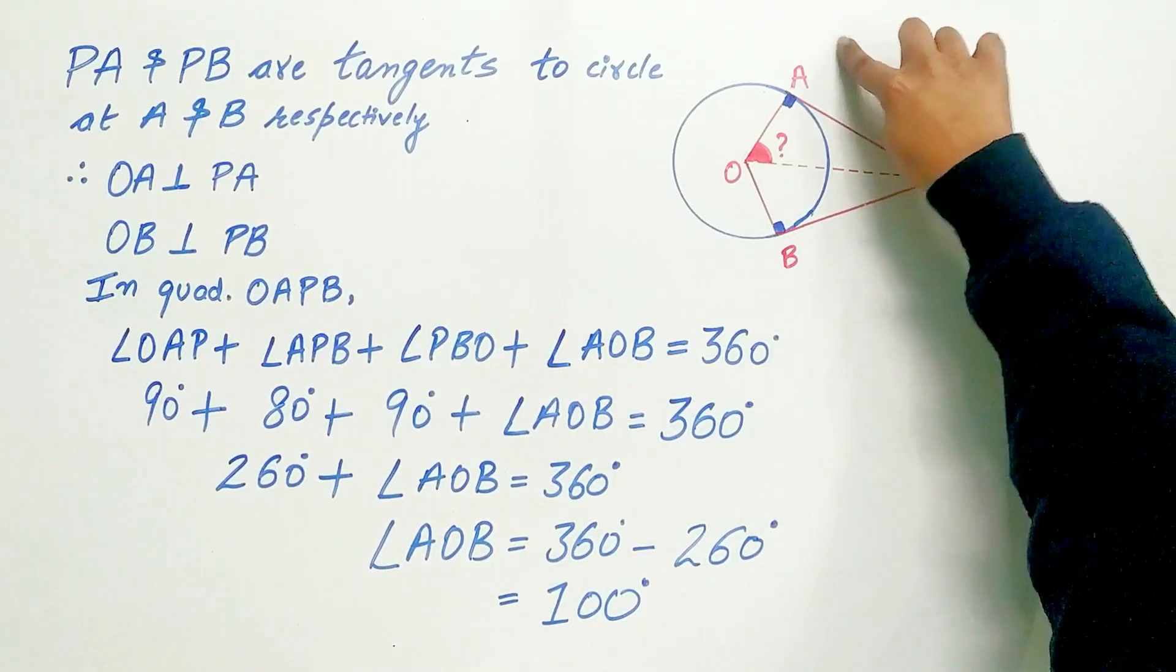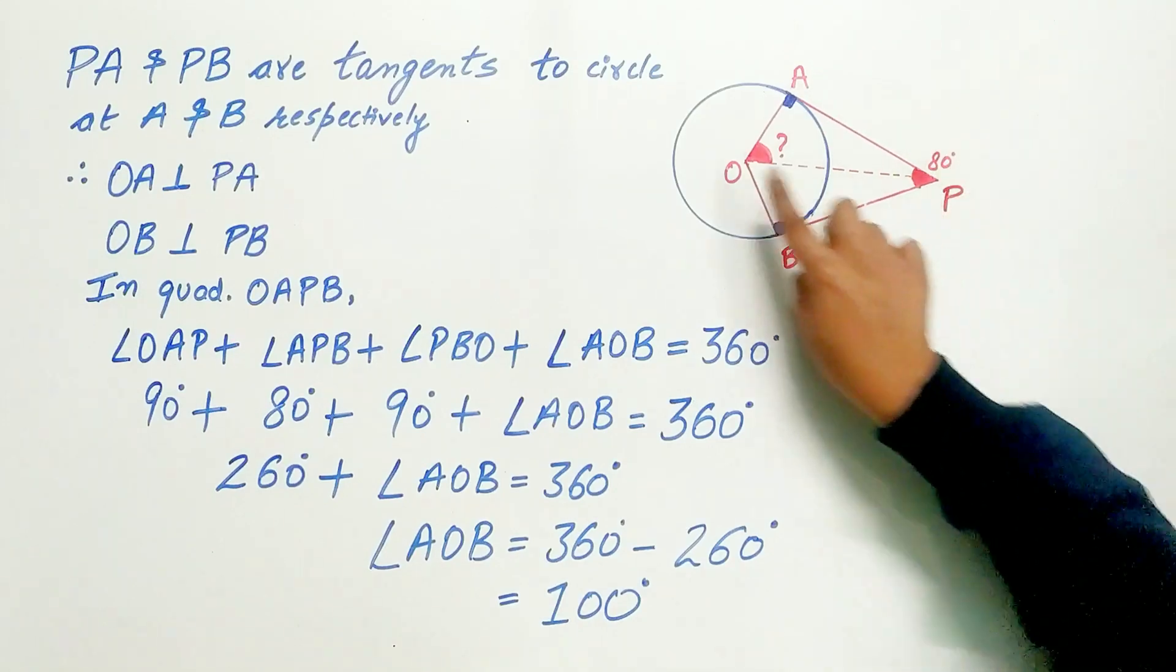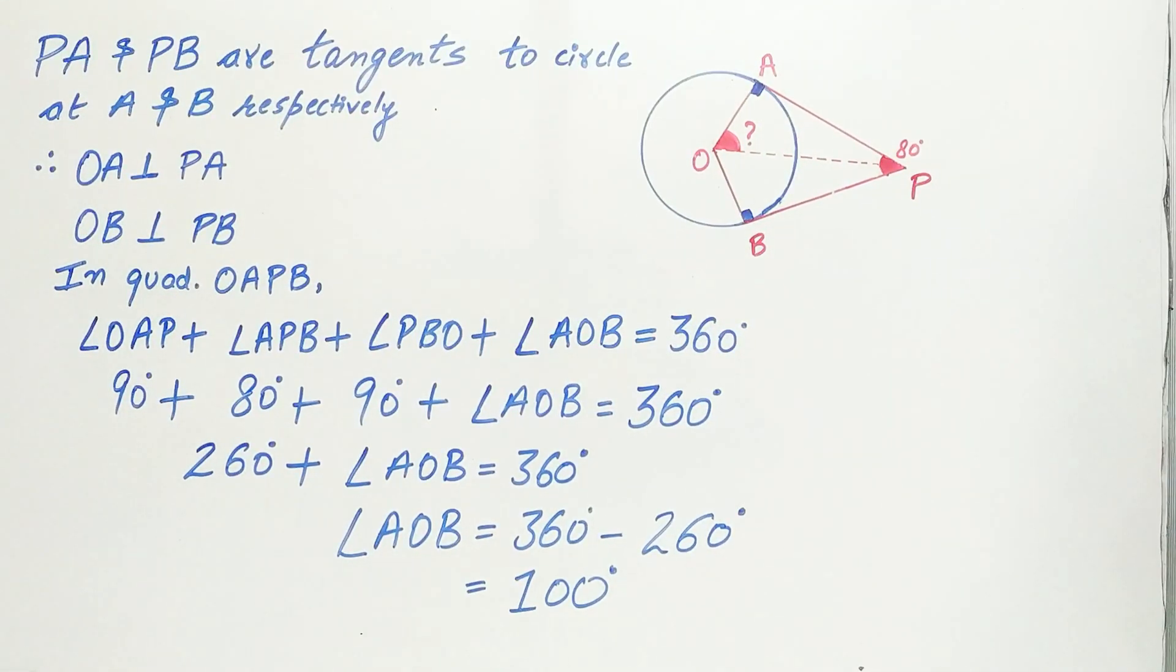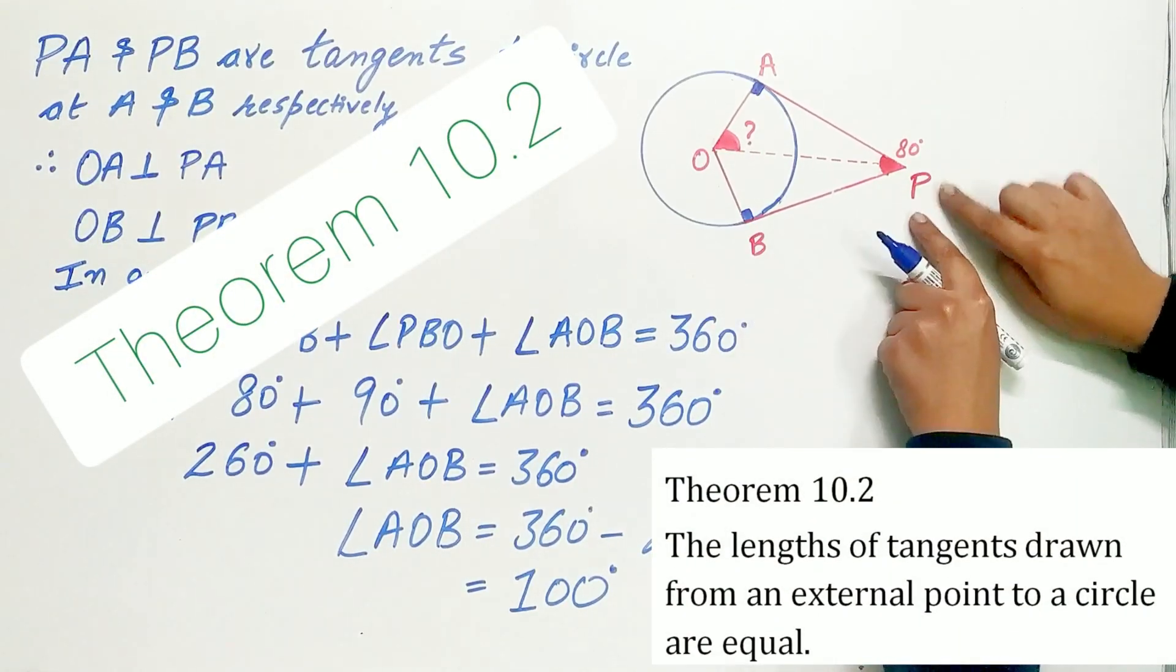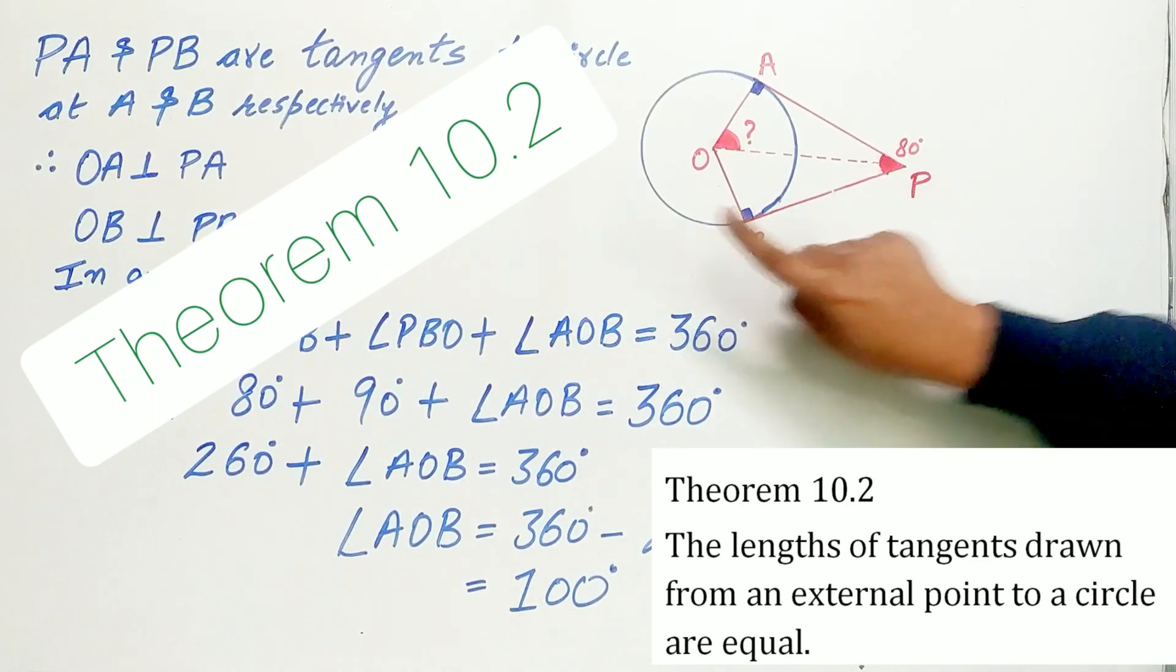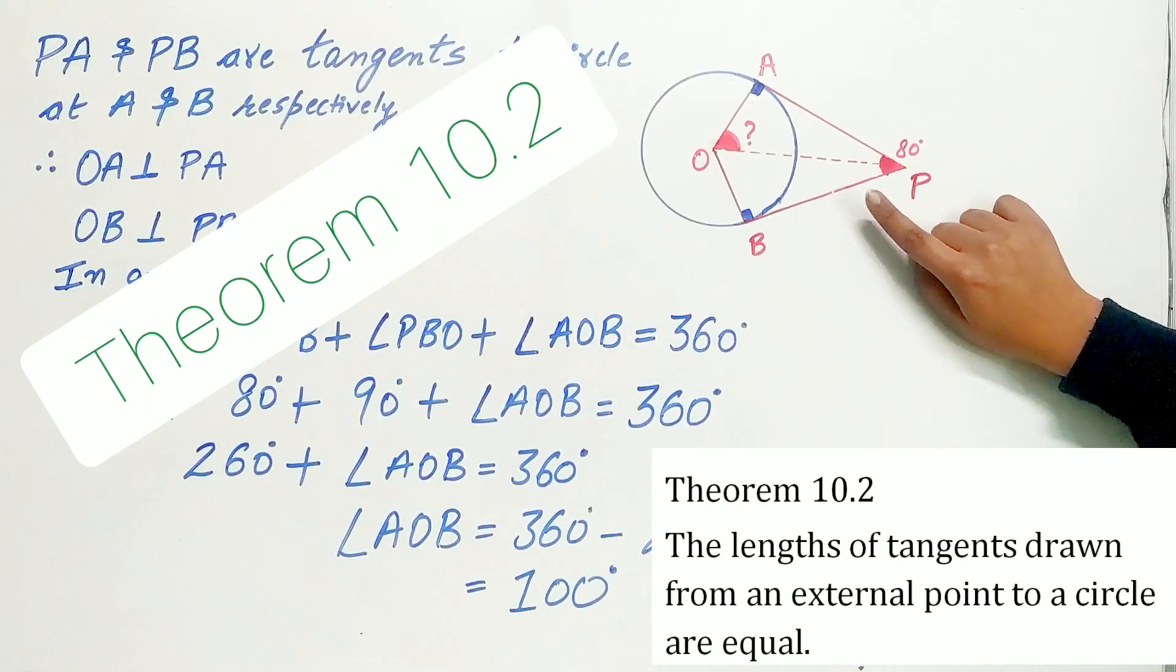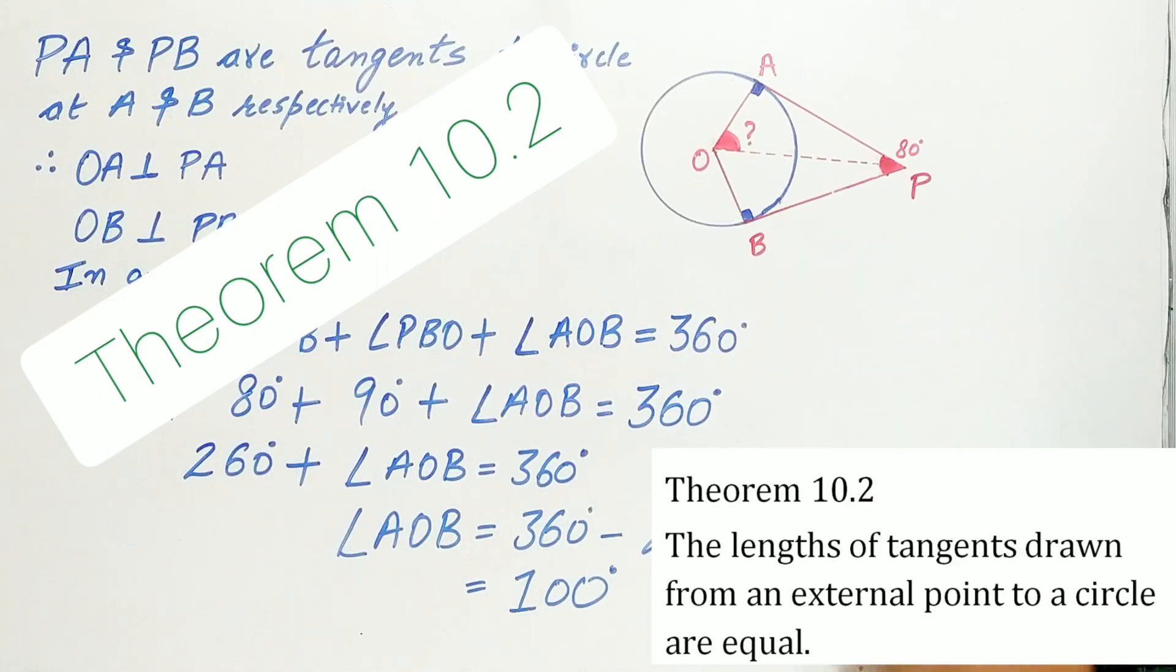Hence, our angle AOB is equal to 100 degree. But, we have to find out angle POA. Listen carefully. Theorem 10.2 says, the length of tangents drawn from an external point to a circle are equal. That means PA is equal to PB according to theorem 10.2.